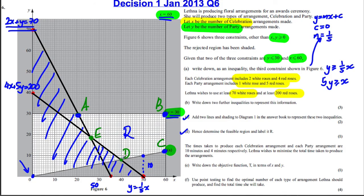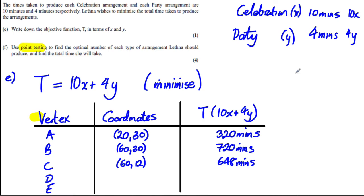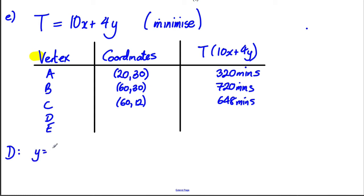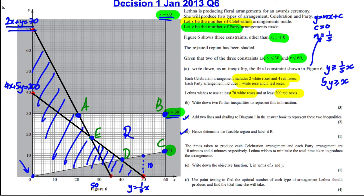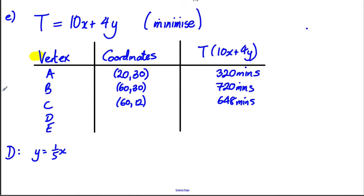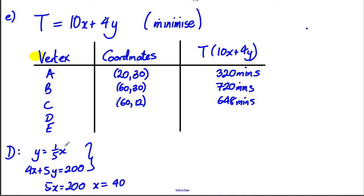Vertex D is where y = x/5 intersects 4x + 5y = 200. Substituting y = x/5 into 4x + 5y = 200: 4x + 5(x/5) = 200, so 4x + x = 200, giving 5x = 200, x = 40. Then y = 40/5 = 8. So D = (40, 8) and T = 10(40) + 4(8) = 432 minutes.